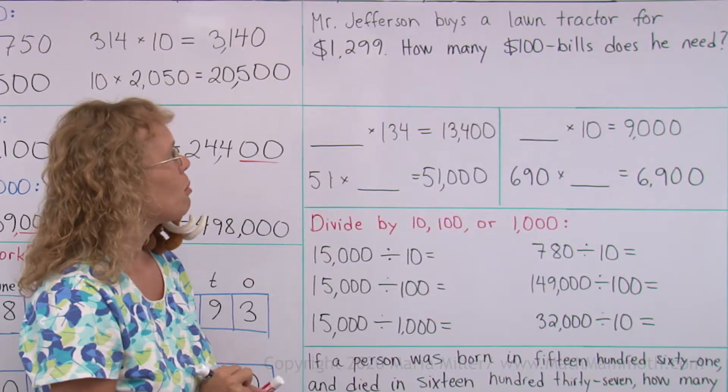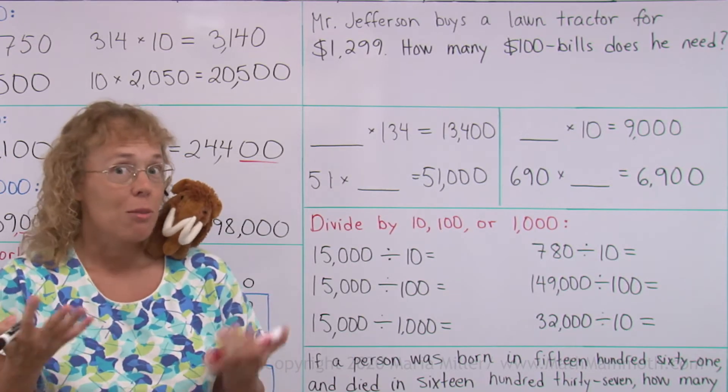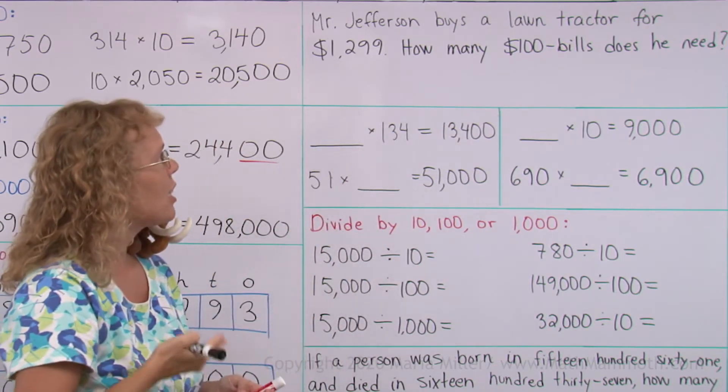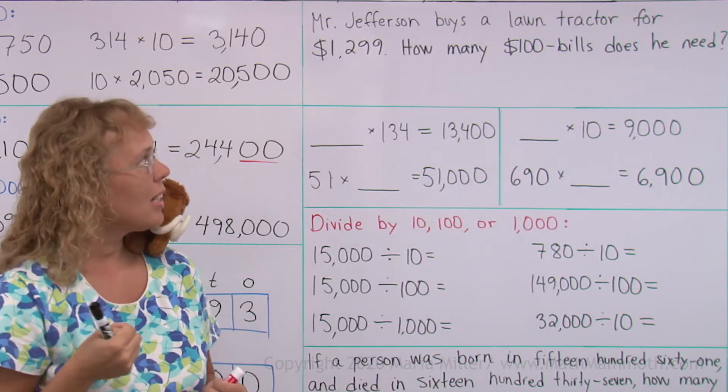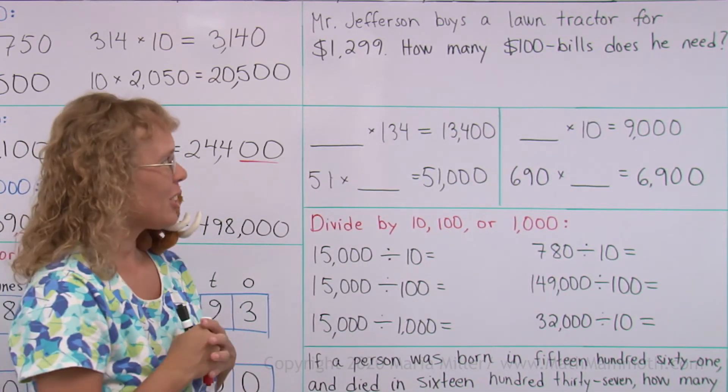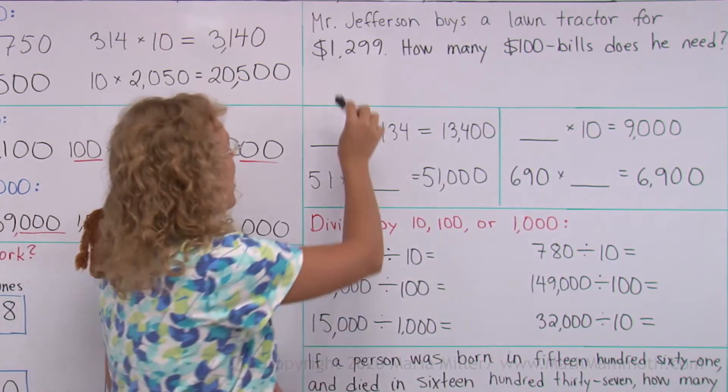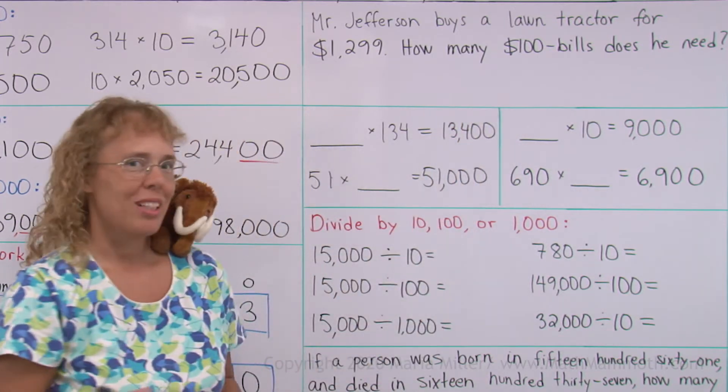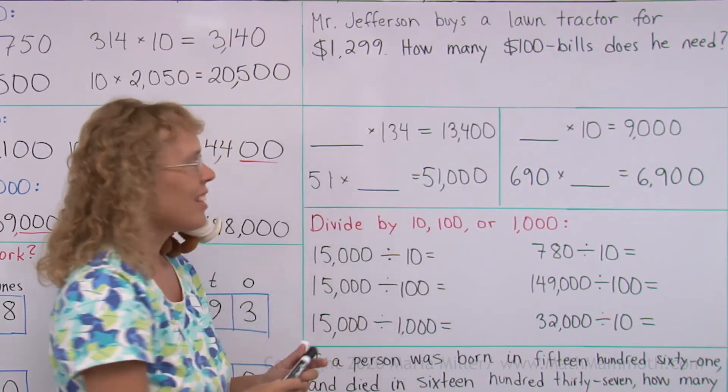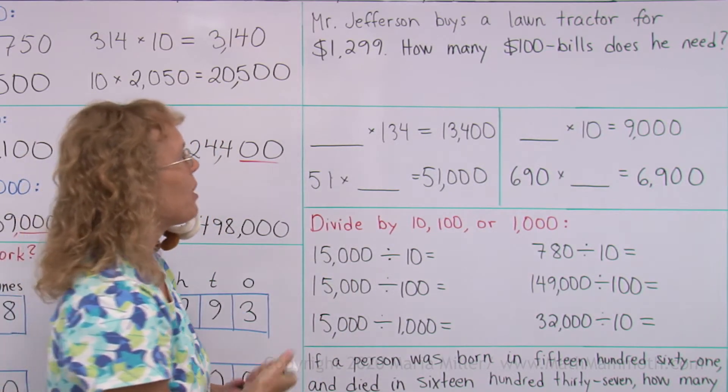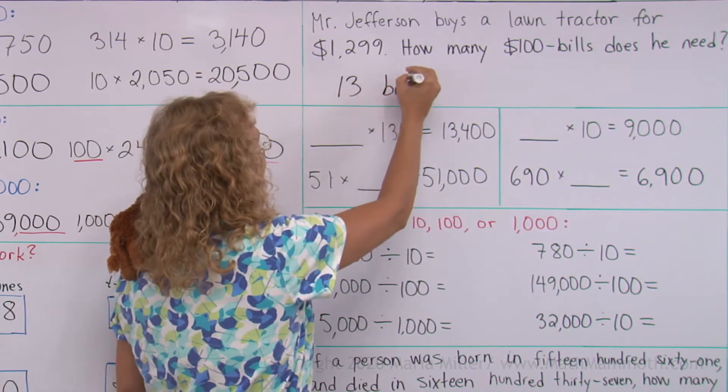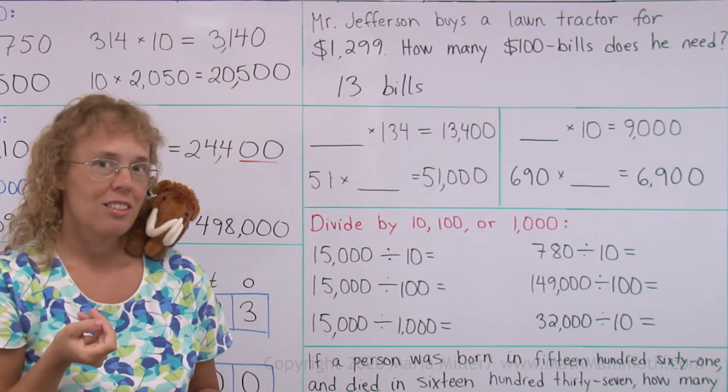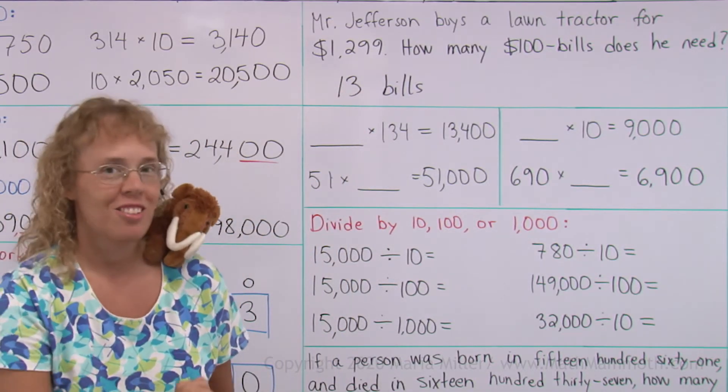Okay, so Mr. Jefferson wants to buy a lawn tractor or a riding mower to mow his lawn. And so it cost $1,299. How many hundred dollar bills does he need? Now this is not a difficult question. You can make it even easier by thinking if the price was exactly $1,000, then he would need ten hundred dollar bills. But since there's this $299, then he needs three more hundred dollar bills. So he needs thirteen of them, right? Thirteen hundred, and many people would read, if this price was $1,300, many people would read it as $1,300.